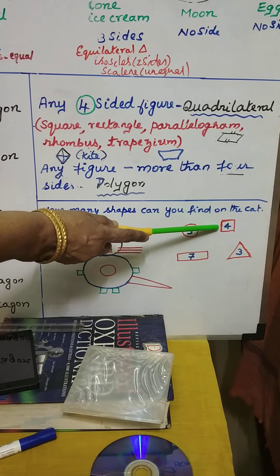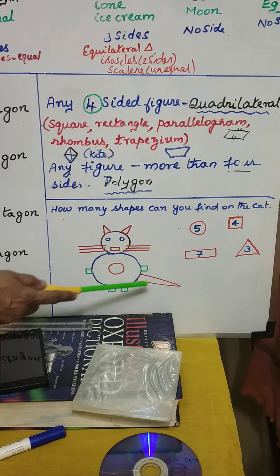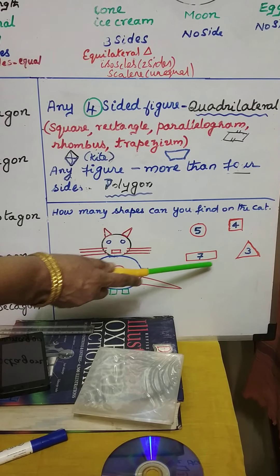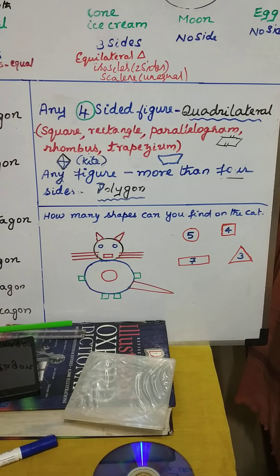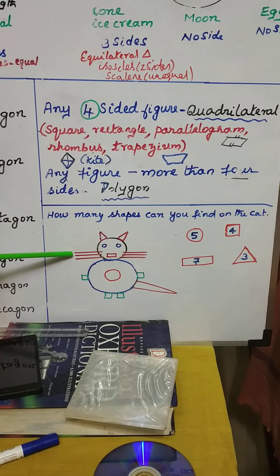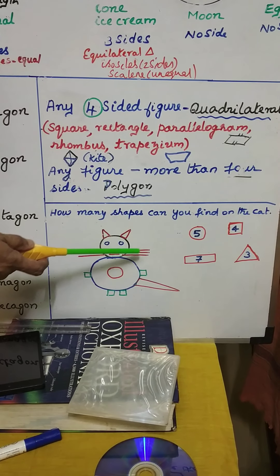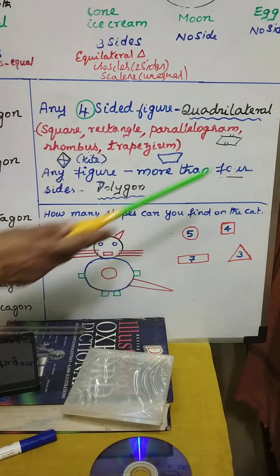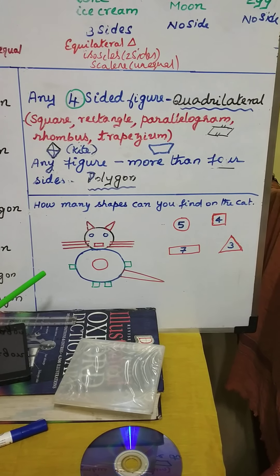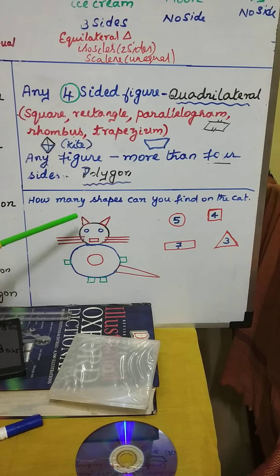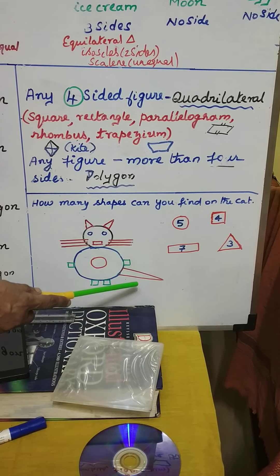Now, what is the shape of this? The shape is square — a four-sided figure. In the cat, there are one, two, three, four squares. Now look at rectangle — the answer given is seven. Let us verify: one, two, three, four, five, six — and the mouth is also a rectangle. So totally seven rectangles. Now this is a three-sided shape. Three-sided means triangle. How many triangles are on this cat? The answer is three — one, two, and the tail of the cat. Totally there are three triangles.